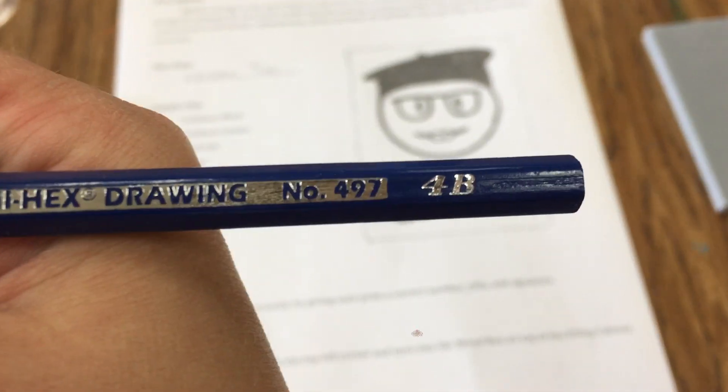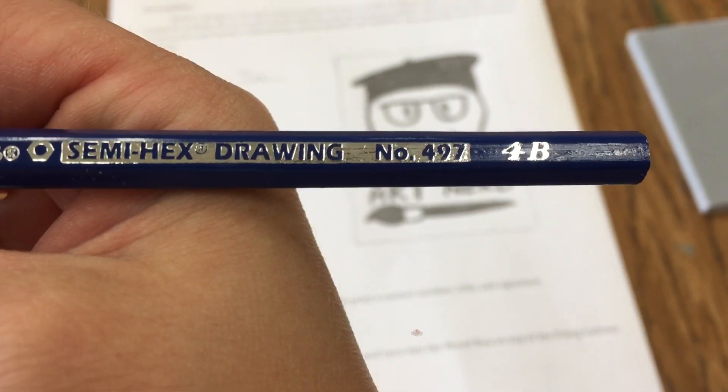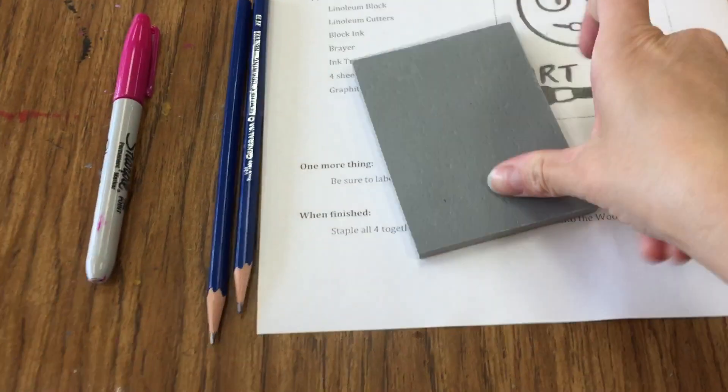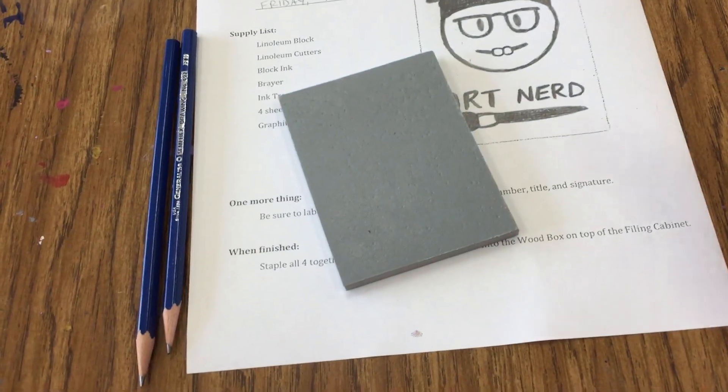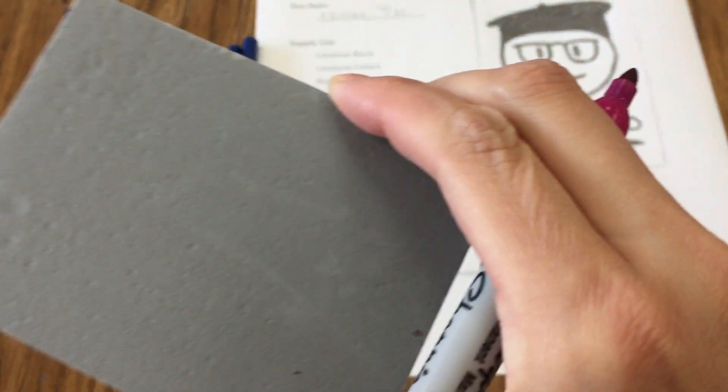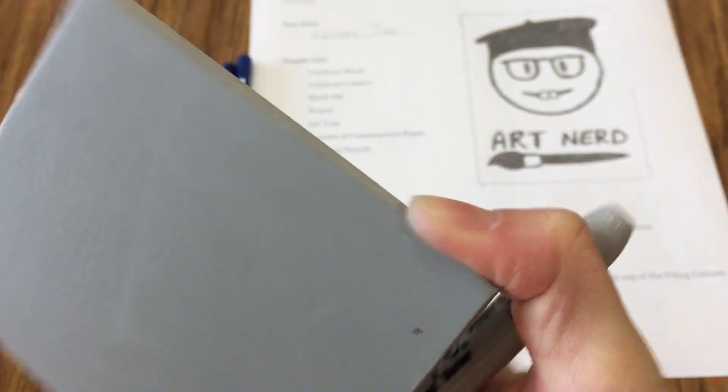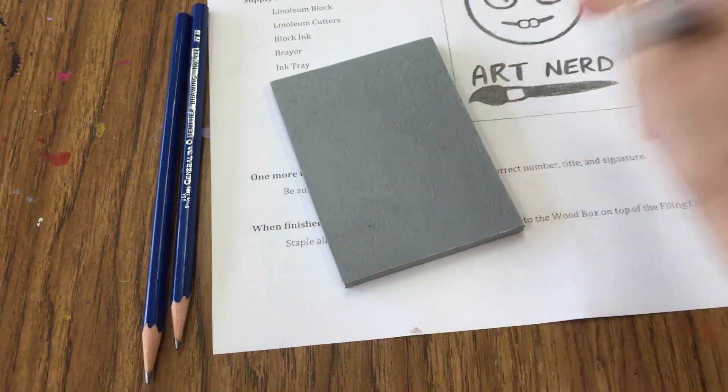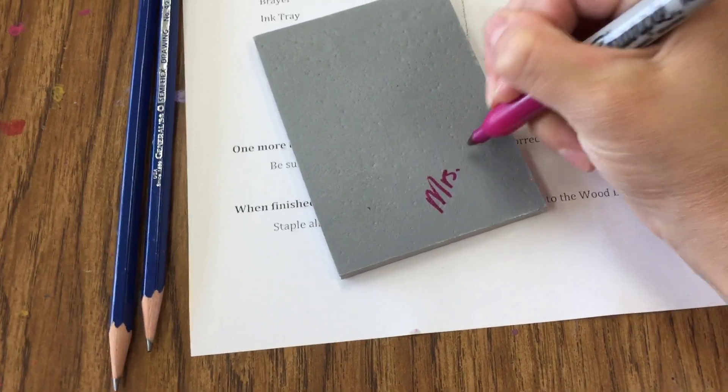I made sure all that was darkened with a B pencil, it's the soft graphite, so I used a 4B. Before I get started I need to grab a Sharpie and I need to write my name and hour on the rough side.